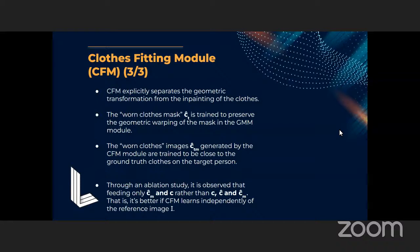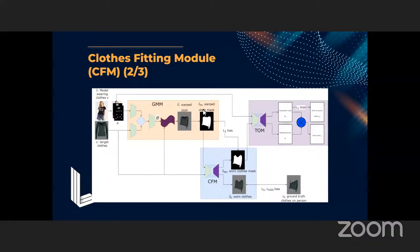Through an ablation study, it was observed that feeding only the warped cloth mask and the cloth of interest to the CFM module was better than feeding those two plus the warped cloth. The warped cloth brings undesirable information from the input cloth in the original image where the model was wearing a different garment, so that information is not desirable.